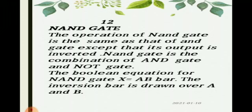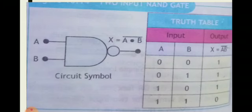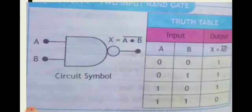The third gate is the NAND gate. The operation of a NAND gate is the same as that of the AND gate, except that its output is inverted. The NAND gate is a combination of the AND gate and the NOT gate. The Boolean equation for the NAND gate is x equals A dot B bar, or AB bar — the inversion bar is drawn over A and B. As shown on your screen, the circuit symbol has two inputs A and B and one output x, shown by A dot B bar with a circle. The circuit symbol is the same as that of the AND gate with the only difference being a circle, which represents the NOT gate.